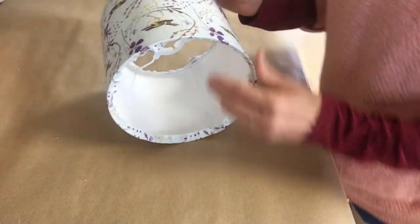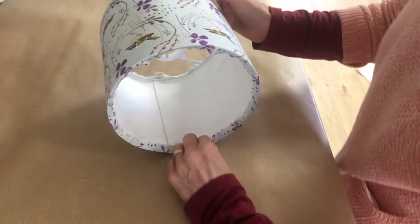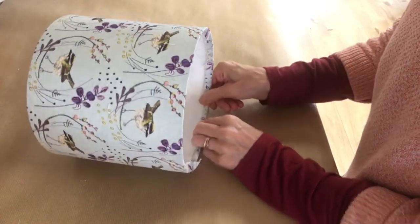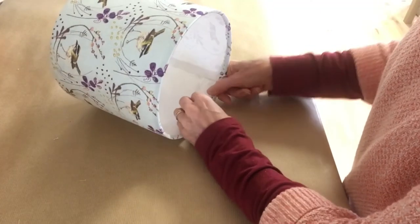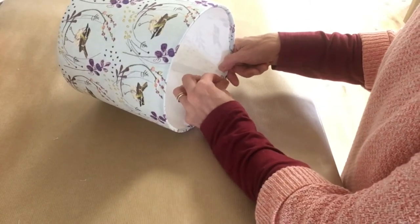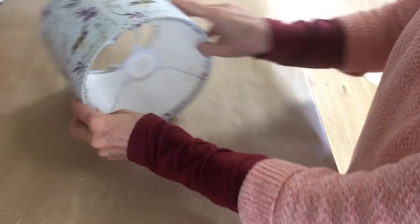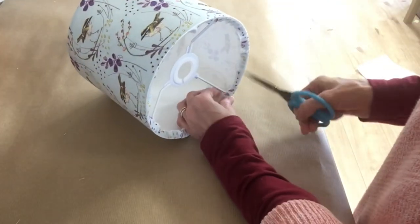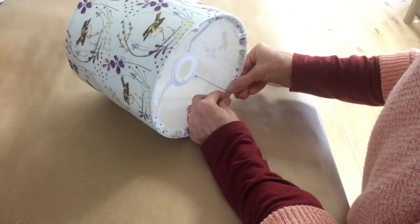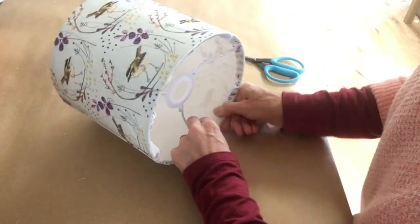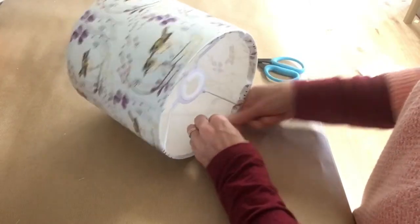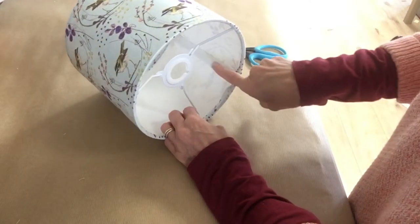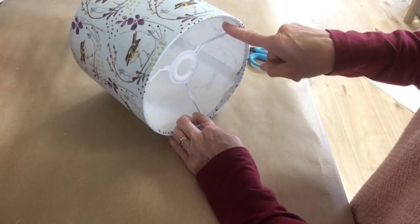When you've gone all the way around, I'm going to push these edges in here. I'm just going to do the same on the other side. Now here you've got these struts, so you're going to have to just snip the fabric so it goes either side of the strut. Now it doesn't really matter where this seam is, but you don't want it on a strut. You want to make sure you've started roughly in between two struts.